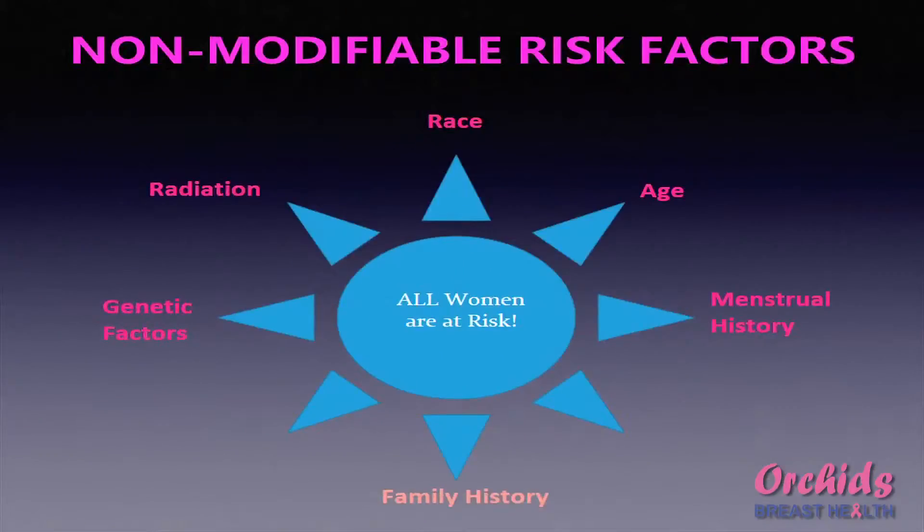How can we prevent breast cancer? To understand how to prevent breast cancer, we need to understand what the risk factors of developing the disease are. The risk factors can be divided into two types: inherent risk factors which are present within our cells and cannot be changed, and other risk factors which we can easily change to try to prevent the disease.